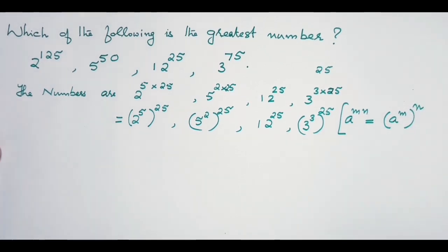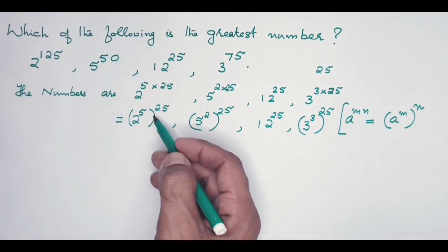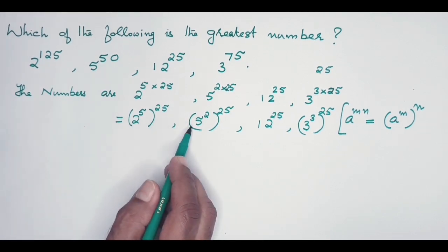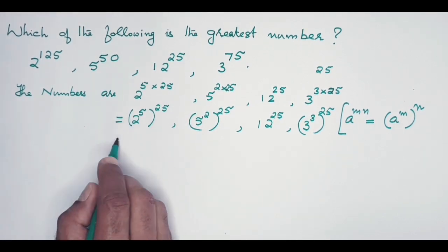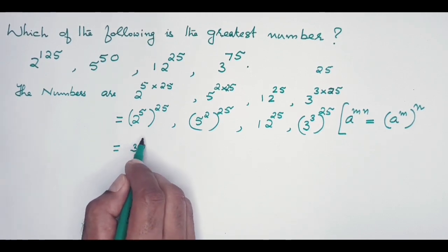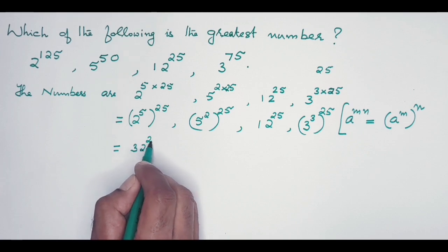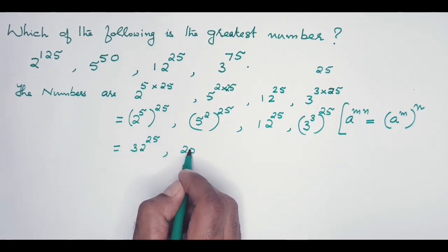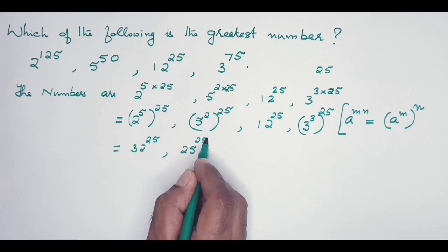See, in all these cases, now let's find out the base figures. The first one is 32—as you know, it's 2 multiplied by 2 five times, you will get 32. Then 25—5 squared is 25 to the power 25. 12 to the power 25. 3 to the power 3 is 27 to the power 25.